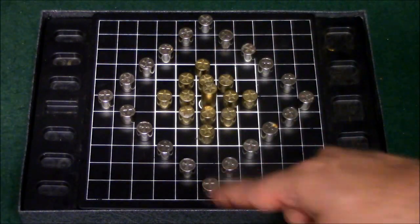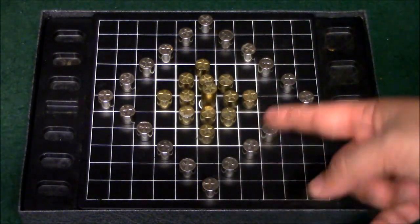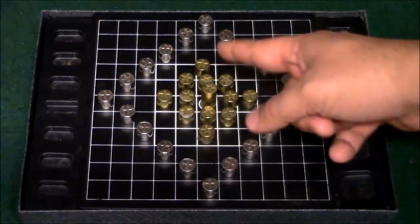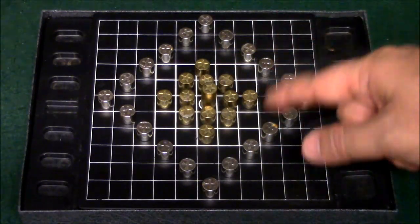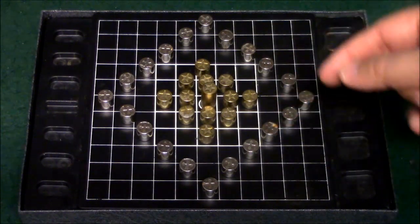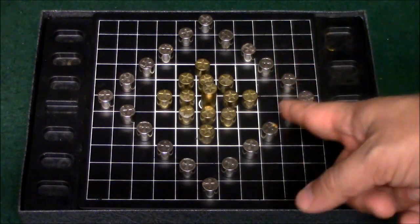The gold team will also be able to move two pieces once unless he decides to move the flagship. If he decides to move the flagship, then the gold player is only going to be able to move the flagship and no other piece, and he's only going to be able to move the flagship once.